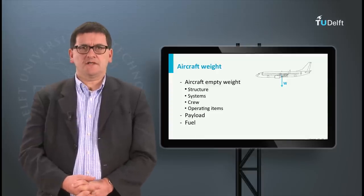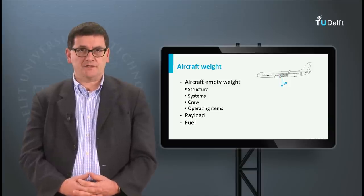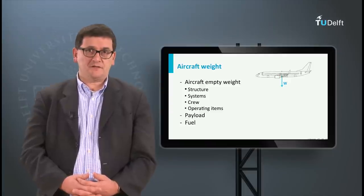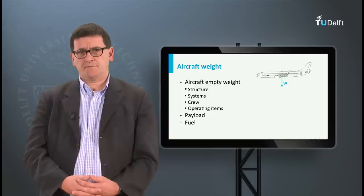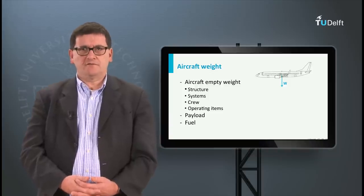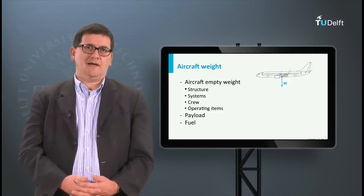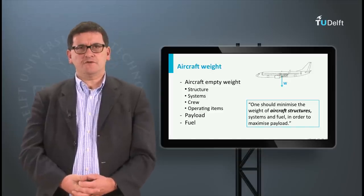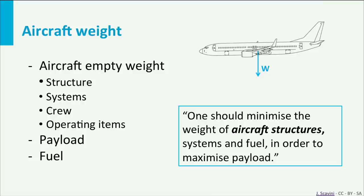The last force to discuss is aircraft weight, which can be divided into three main components: the empty weight of the aircraft, the weight of the payload — which could be passengers, cargo, or a mix — and the weight of the fuel. The aircraft empty weight itself consists of the weight of the structure, the systems, the crew, and operating items. For an airline it is important to reduce the aircraft empty weight as much as possible, so that more payload can be transported or the aircraft can fly longer distances.